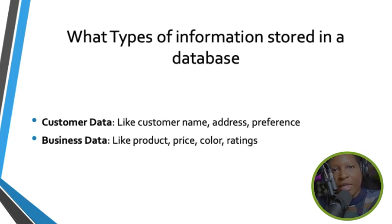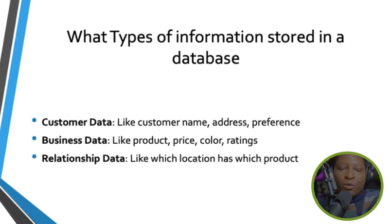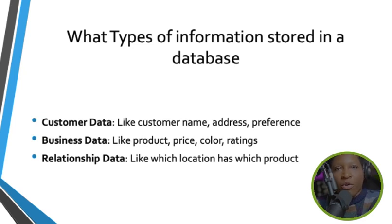The next type of data stored in databases is business data. Business data includes the store number or store ID, prices, inventory, manufacturer, or anything related to a business. The last type is relational data — for example, which location has which products, or which store a customer purchased a product from.